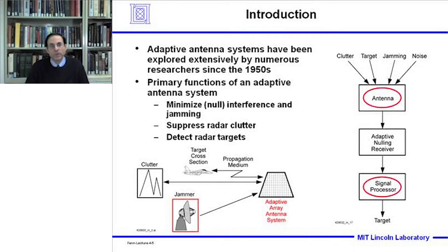By way of introduction, adaptive antenna systems have been explored extensively by numerous researchers since the 1950s. The primary functions of an adaptive antenna system are to minimize interference and jamming, to suppress radar clutter, and to detect radar targets. In the diagram shown in the lower left, we're going to analyze an adaptive phased array antenna with single and multiple jammers under near field and far field conditions, analyzing array mutual coupling effects and discussing signal processing used to null out the jamming.